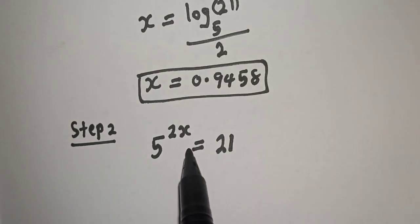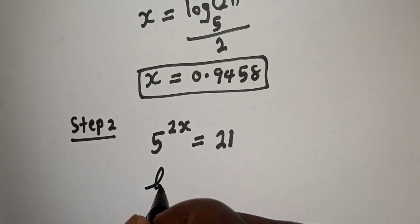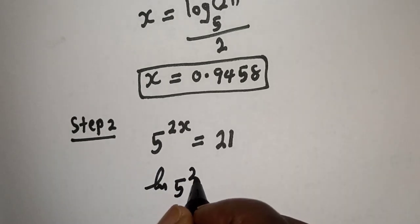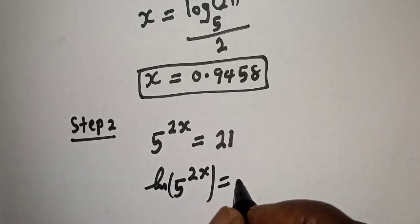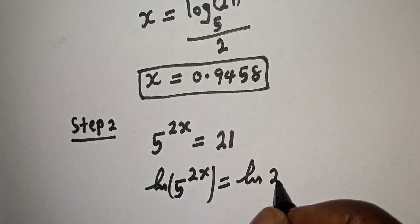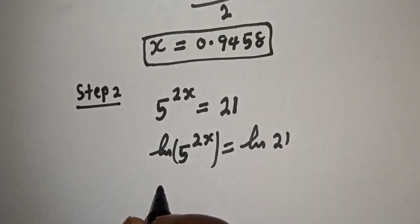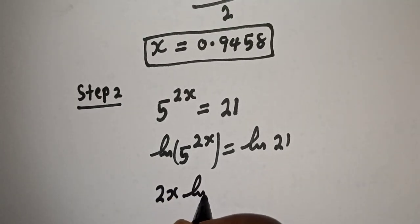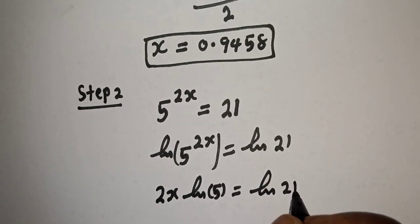Let's take the natural log of both sides. That is, natural log of 5 raised to the power 2x is equal to natural log of 21. Applying the power rule: 2x times natural log of 5 is equal to natural log of 21.